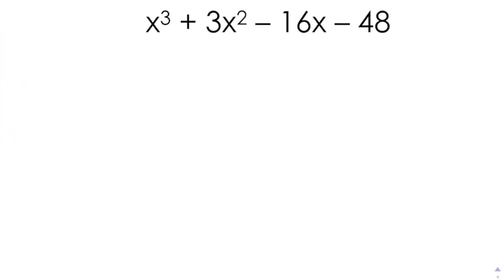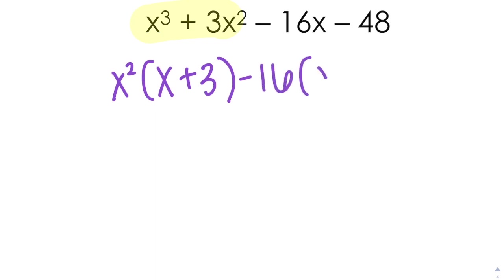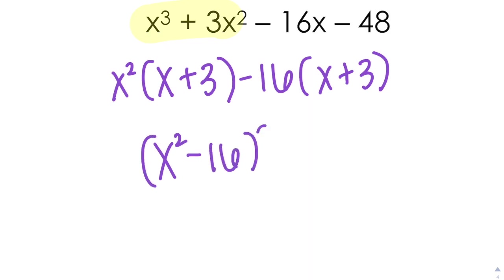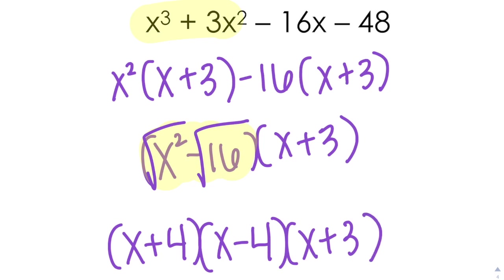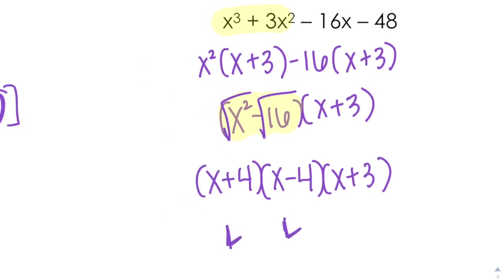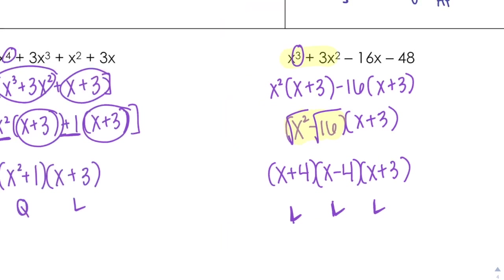Looking at this one: they have nothing in common, so I can just group it. From the first half, take out X squared, leaving X plus 3. From the second half, take out negative 16, leaving X plus 3. So I get (X squared minus 16) times (X plus 3). But don't forget — X squared minus 16 is a difference of squares. Square root it to get X plus 4 times X minus 4. So I get X plus 4 times X minus 4 times X plus 3 — three linears. 1 plus 1 plus 1 is 3.